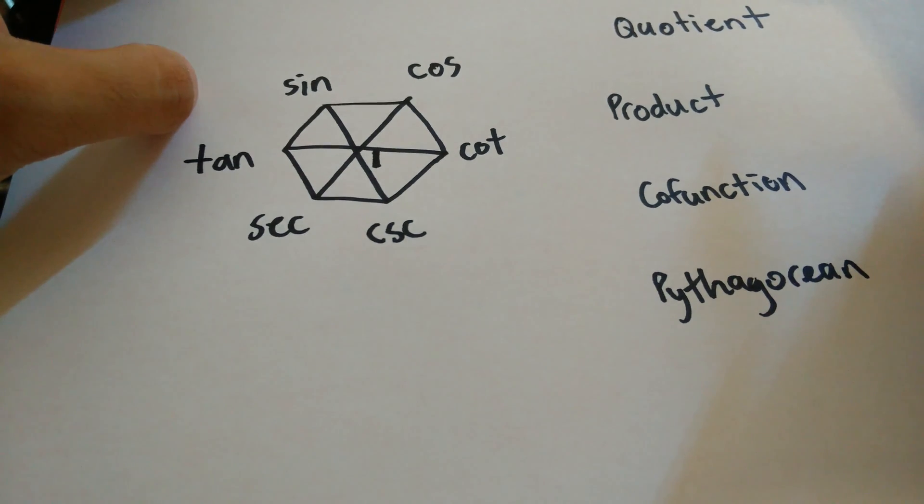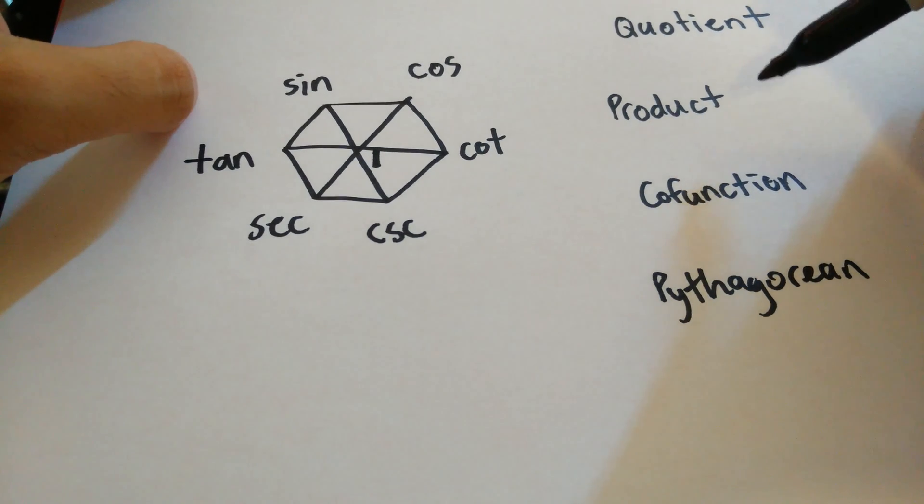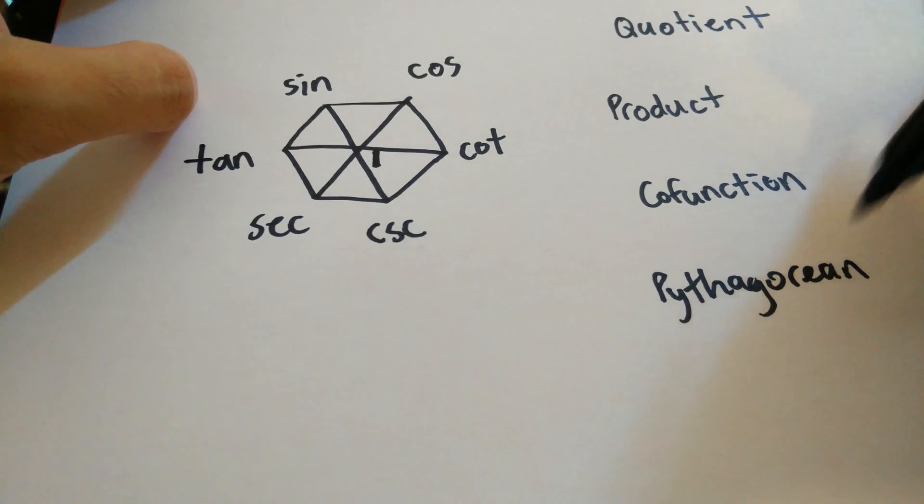The four sets of identities that you can get from this are the quotient identities, the product identities, the cofunction identities, and the Pythagorean identities.